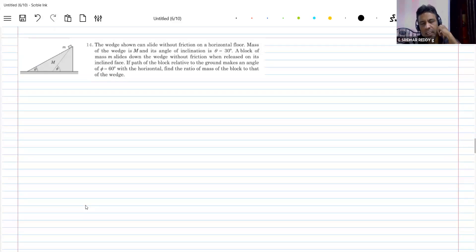The wedge shown can slide without friction on the horizontal floor. The mass of the wedge is m and its angle of inclination theta equals 30 degrees. A block of mass M slides down the wedge without friction when released. The wedge and the block are free to move.